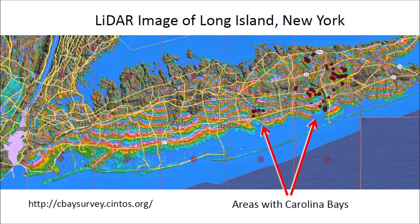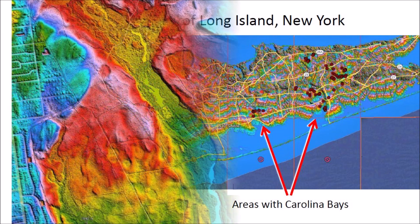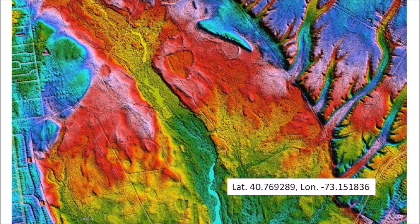You can find the link to the Carolina Bay LiDAR visualization tool in the video description below. Carolina Bays in Long Island are difficult to spot because the island is heavily urbanized and many of the bays have been obliterated by human structures.